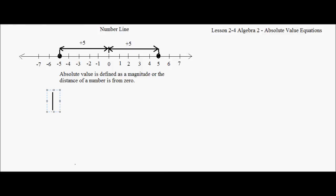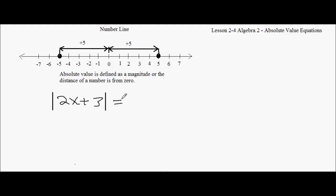Let's say the absolute value of 2x plus 3 equals negative 2. Is this even possible? If I plug anything in here, can I get a negative answer? There's no way I'm going to get a negative from an absolute value. So this is impossible — every time you have an absolute value equaling a negative, there's no solution.